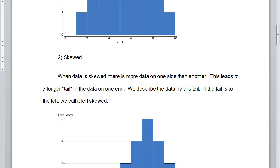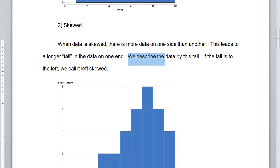What happens when it's not? Well, it could be skewed. So when the data is skewed, there's more data on one side than another. And this leads to a longer tail in the data on one end. And so we describe the data by this tail. I think that's the easiest way to think of it.